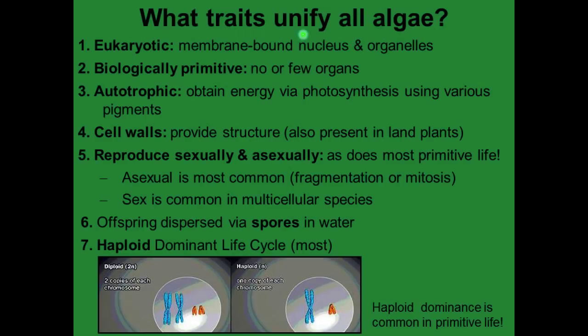What traits unify all algae? One, they're eukaryotic, which means they have a membrane-bound nucleus and organelles. Two, they're biologically primitive — no or few organs. Three, they're autotrophic, so they obtain energy via photosynthesis using various pigments. Four, they have a cell wall. These cell walls can be made of different substances, but they provide structure, and we also see those in land plants.